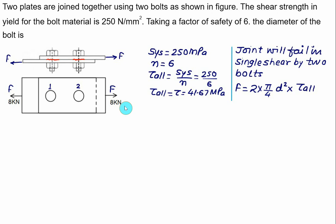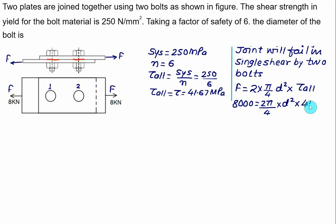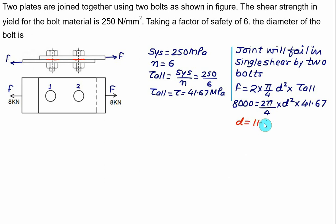The given force is 8 kN (8000 N), equal to 2 × (pi/4) × D² × 41.67 MPa. Solving this, the diameter of the bolt equals 11.06 mm.